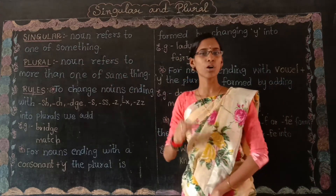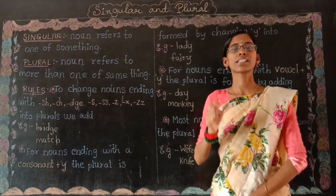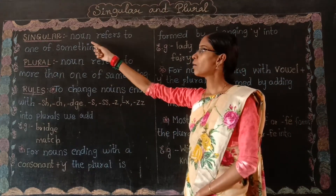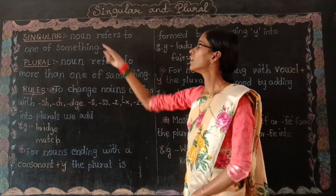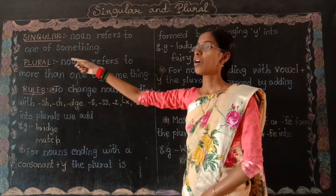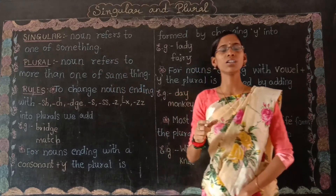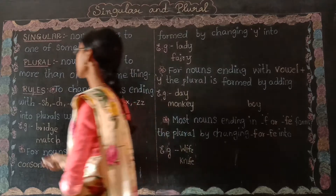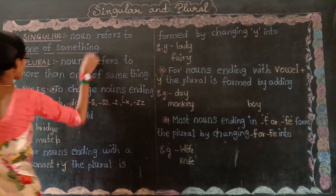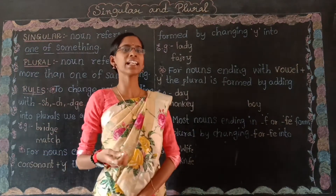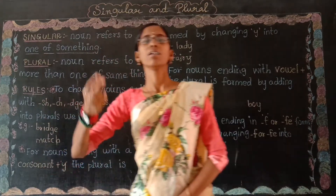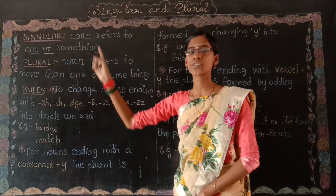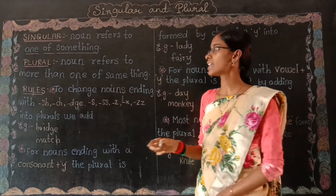First of all, you have to know the definition of singular noun and the definition of plural noun. What is meant by singular? A singular noun refers to one of something. If a noun refers to one thing, then it is known as singular. You can take anything like a chocolate, book, or water bottle. If you are referring to one of something, then it is known as singular.